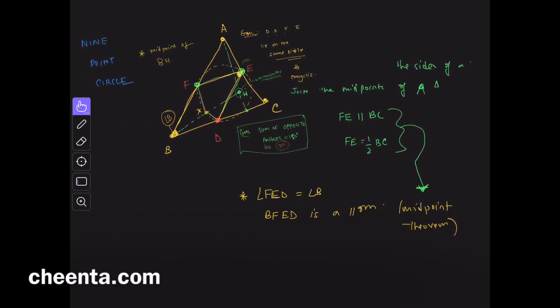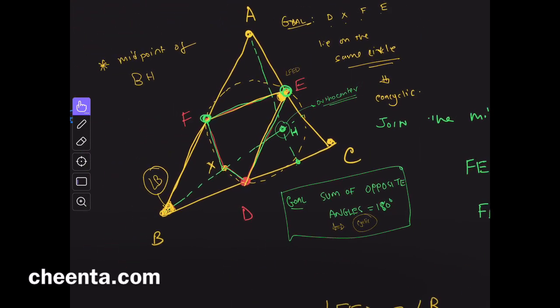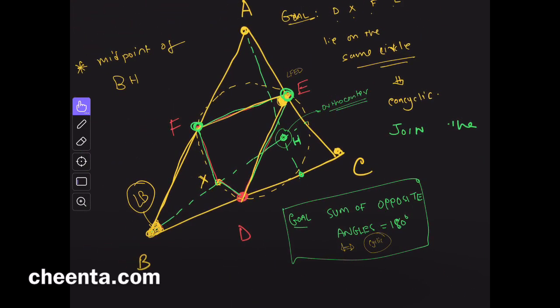So, since it's a parallelogram, opposite sides will be equal and parallel. So, these two angles right here, angle B, angle FED are equal. So, what we will show, and this is the trick, we will show that this angle right here, in red, this angle is 180 minus B.